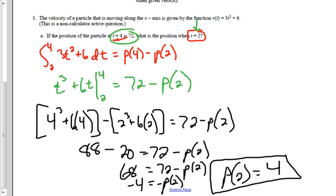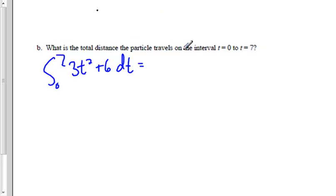Part b says: what is the total distance that the particle travels on the interval from time equals 0 to 7? The nice thing is, I know from 0 to 7 my velocity is always going to be positive—at zero it's 6, and then it's squared so it's quadratic—so I'm going to continue going in the positive direction. All I have to do is take the antiderivative.